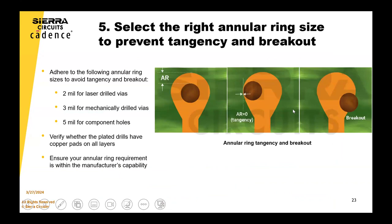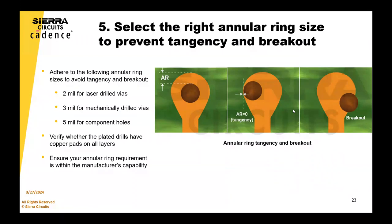A little deeper dive into annular rings: specify your annular rings per design class — Class 2 or Class 3. We have a great blog article that covers this in super detail. Make sure that the annular ring for a mechanical drill can be different than for a laser drill. What's depicted here shows that breakouts or tangencies are allowed for Class 2, but for Class 3 that is definitely not allowed. That's why you have to design differently depending on whether you're Class 2 or Class 3.